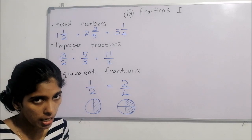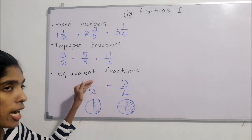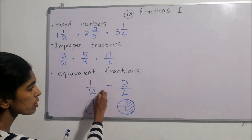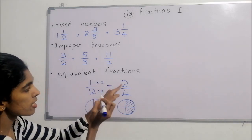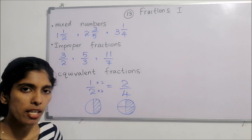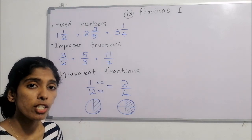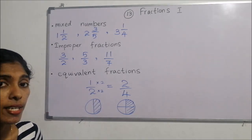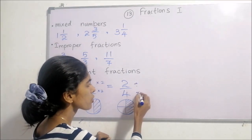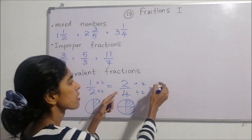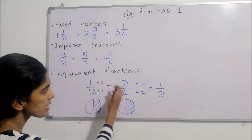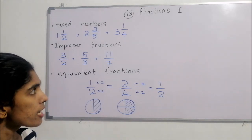We obtain equivalent fractions by multiplying or dividing. Multiply both numerator and denominator by the same number — for example, multiply by two: two times one is two, two times two is four. You can multiply by any number. Alternatively, divide both numerator and denominator by the same number — dividing two over four by two gives one over two. By multiplying or dividing by the same value, you can find equivalent fractions.